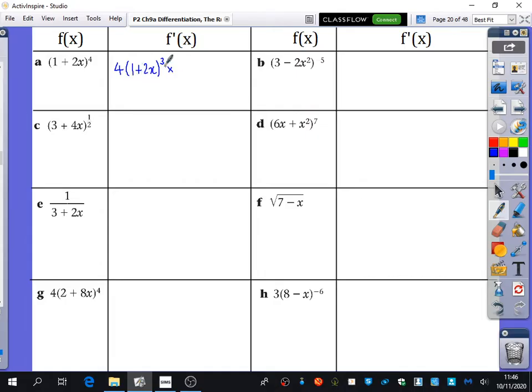The derivative of this thing inside is 2. So the derivative is this, but I'm probably going to want to simplify that. The 2 and the 4 multiply, so I get 8 brackets 1 plus 2x cubed.